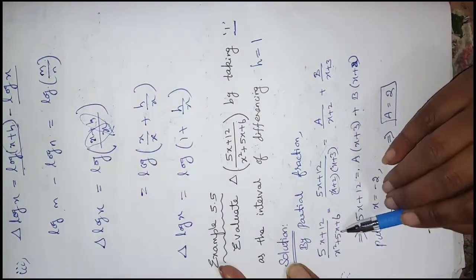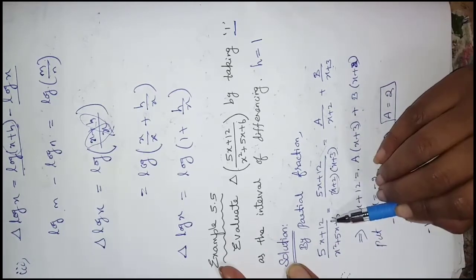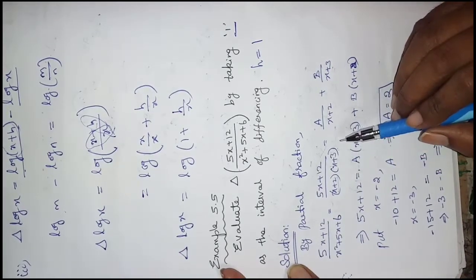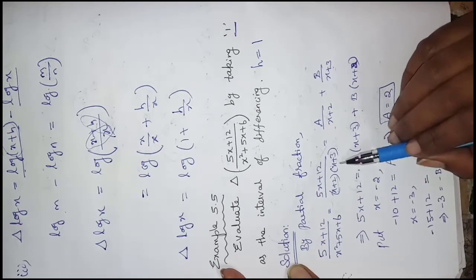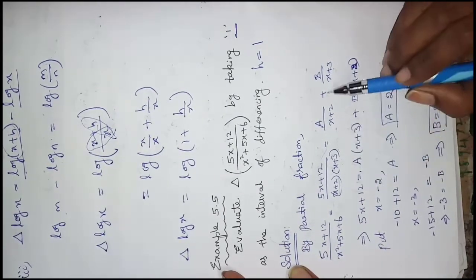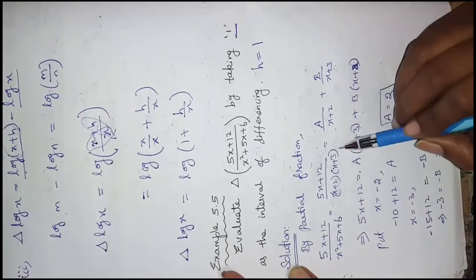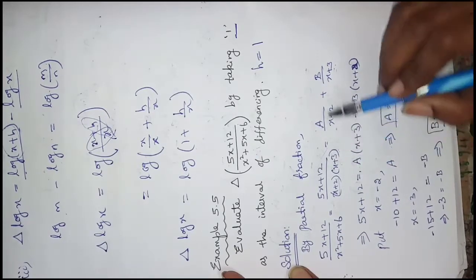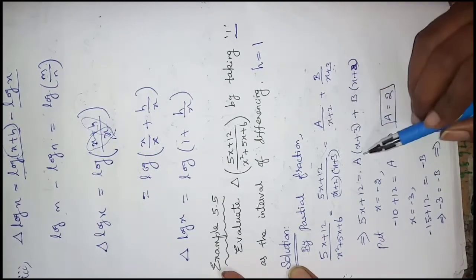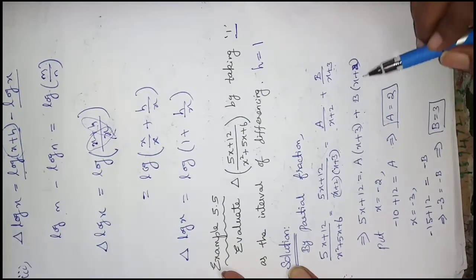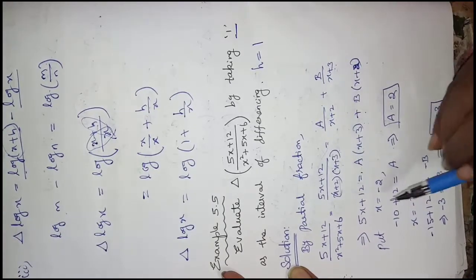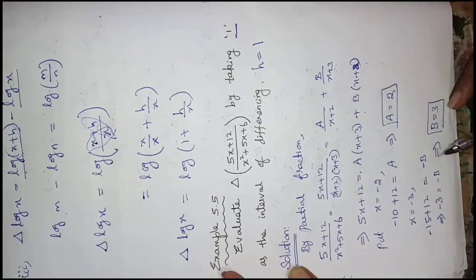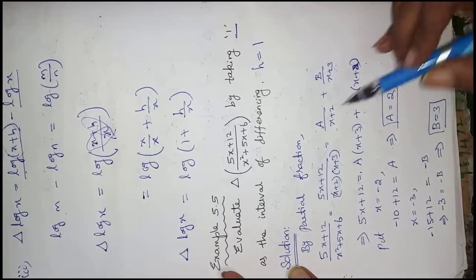We have (5x + 12) divided by (x² + 5x + 6). The denominator factorizes as (x + 2)(x + 3). So this equals A divided by (x + 2) plus B divided by (x + 3). Multiplying through, (x + 2) cancels giving A(x + 3), and (x + 3) cancels giving B(x + 2). Solving gives A = 2 and B = 3.